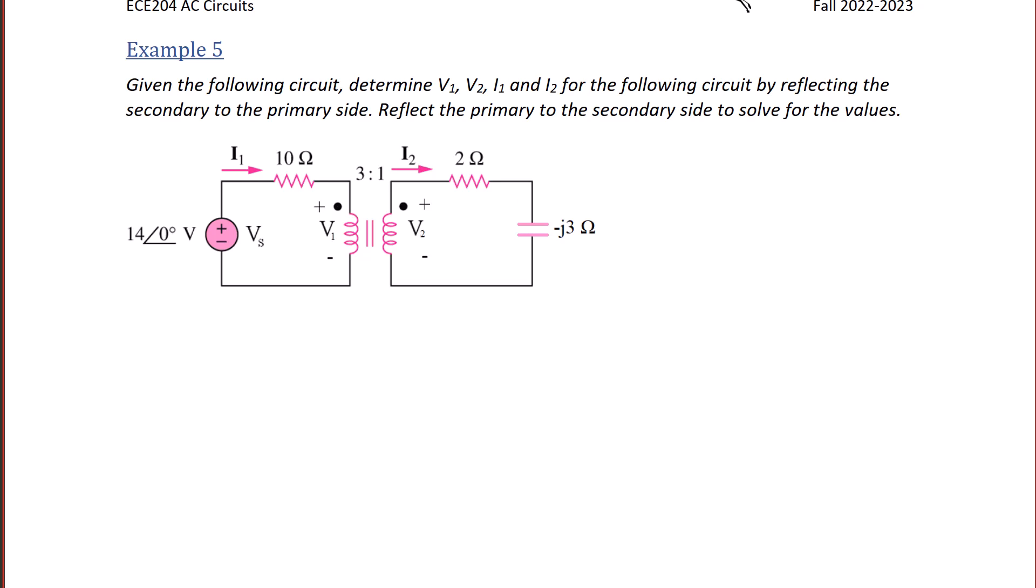Hello and welcome back. This is the last example in this lecture, example five. Given the following circuit, determine V1, V2, I1, and I2 by reflecting the secondary to the primary side. Recall that the primary side is on the left and the secondary side is on the right.